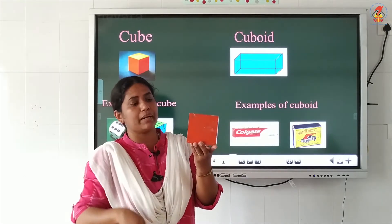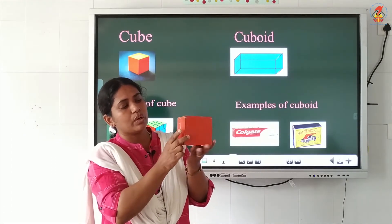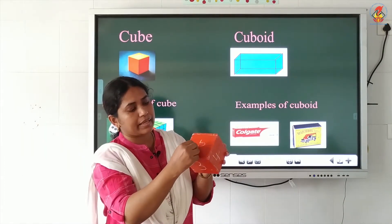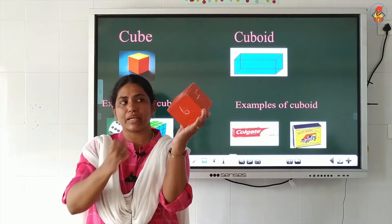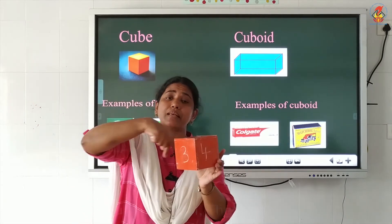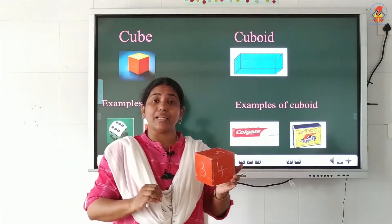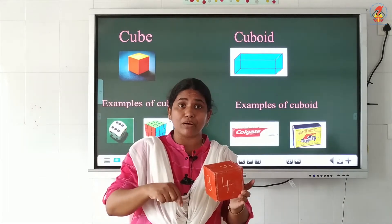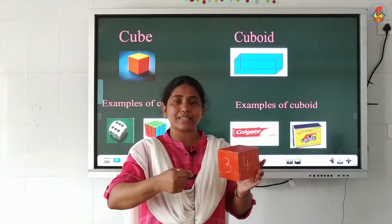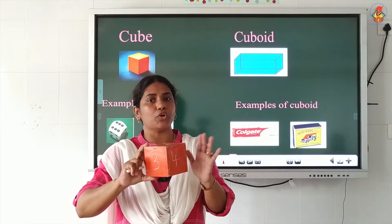Let's count how many faces are there for a cube. Look at the picture. Here the first face — I mark 1, this is 2, here 3, here 4, upside I mark 5, downside I mark 6. So altogether there are 6 faces for a cube. It is very easy to remember, because the good example for cube is our dice. In our dice also, how many numbers are written? 1 to 6 — six numbers. So just remember there are 6 faces for a cube.